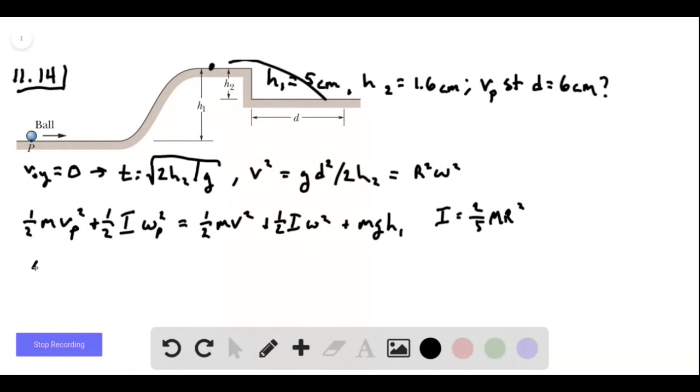We'll find g d squared over 2h2, plus 10 g h1 over 7, would be equal to vp squared.